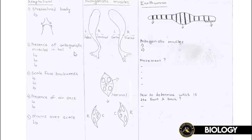Adaptation number two is the presence of antagonistic muscles in the tail. Antagonistic muscles are a pair of muscles where one contracts and the other relaxes to allow movement. The specific muscles here are known as myotome — M-Y-O-T-O-M-E. Myotome are the antagonistic muscles present in a fish's tail. They help the tail flip left and right, which in turn provides forward thrust.